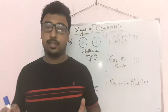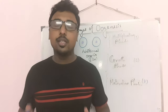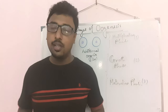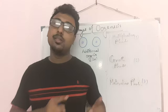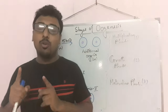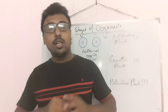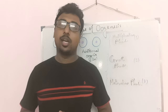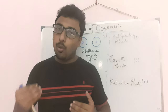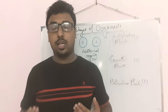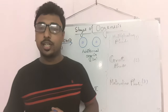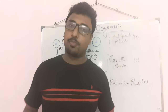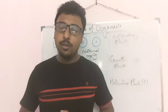Oogenesis means just the production of ovum. In the female body, two ovaries are present, and each month from the ovary one egg or one ova will release in an alternating process. The release of ovum or ova from each ovary is the process known as ovulation. But how the ovum will be produced inside the ovary — that process is oogenesis.